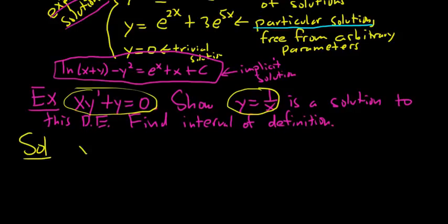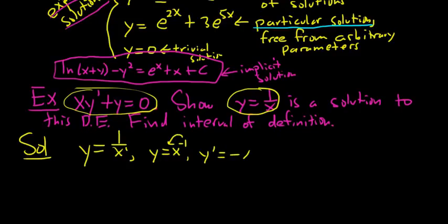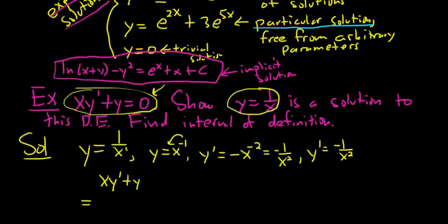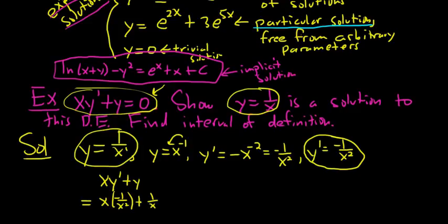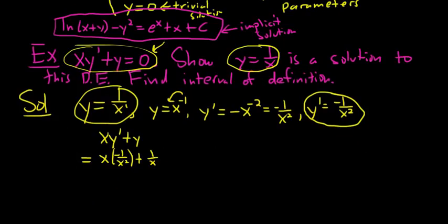To show it's a solution, we plug the function into the differential equation. So y equals 1 over x, which we write as x^(−1). Taking the derivative using the power rule, we get y' equals negative 1 over x squared. Now plugging into the DE: x times (−1/x²) plus 1/x. The x cancels, giving negative 1/x plus 1/x.